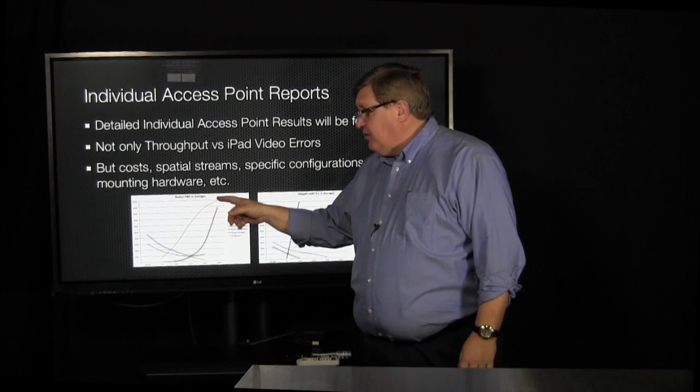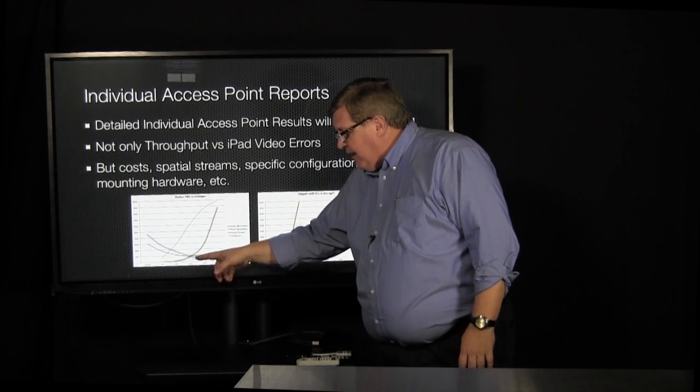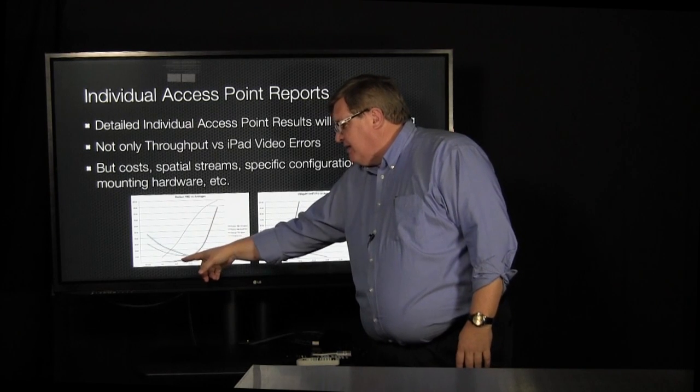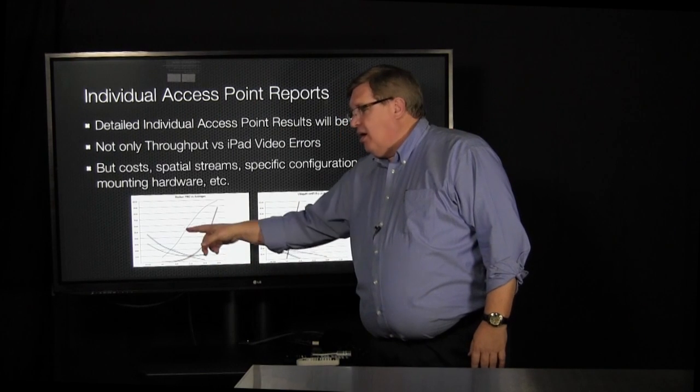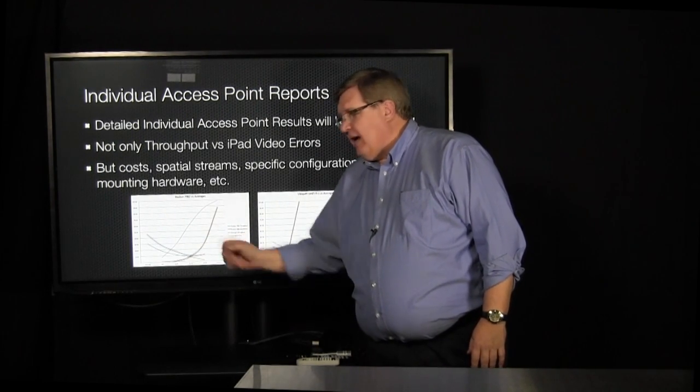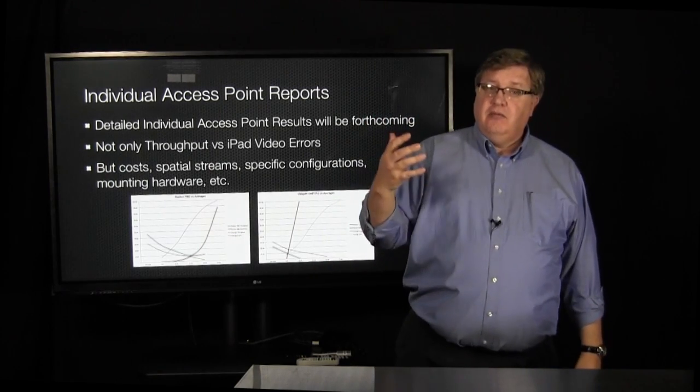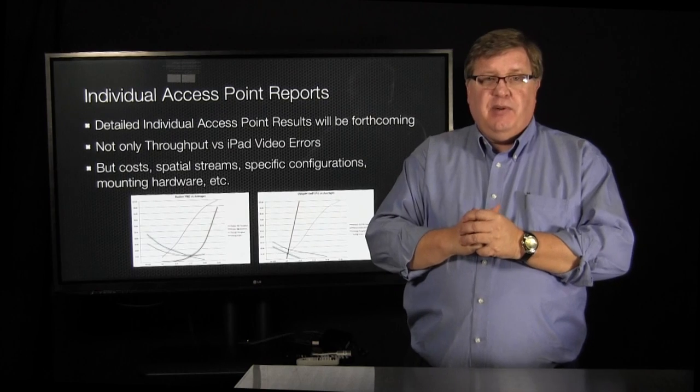So we see over here, the 7982 from Ruckus had, this red line was way to the right of the average. Meaning its red line is iPad video errors, far to the right. It stayed with fewer errors, longer than average. And its blue line, its data, was above the average line. So in video performance, it was better than average. And in data throughput, performance is better than average.